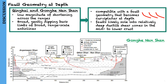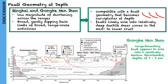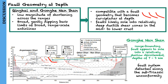In contrast, the fault system beneath the Gonghe-Nanshan appears to sole into a relatively shallow décollement at depths between 7 and 9 km, which probably reflects the bedrock geology underlying the Gonghe Basin complex. They suggest that the mechanical discontinuity — the unconformity — at the base of the Triassic may represent the primary detachment horizon for the Gonghe-Nanshan fault network.